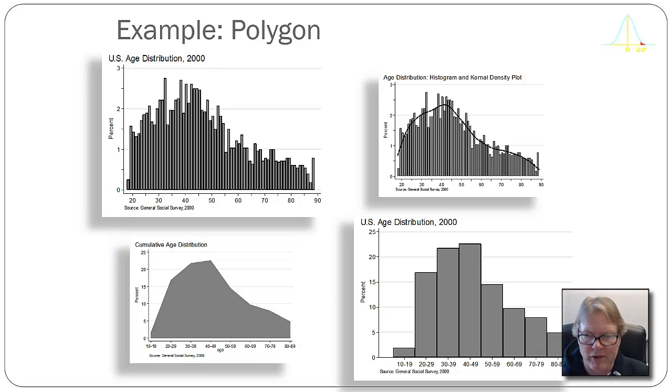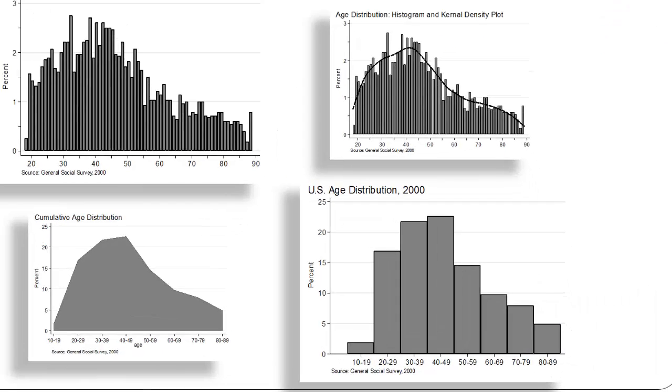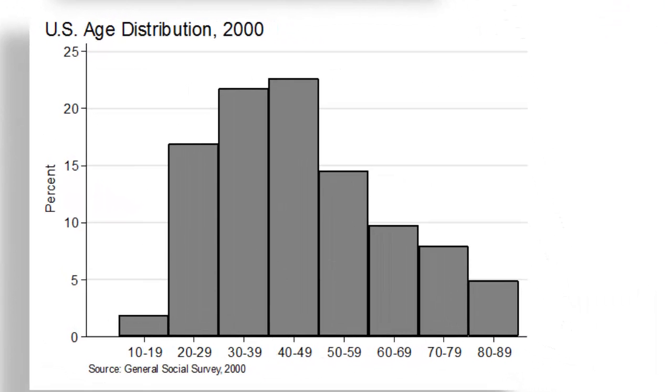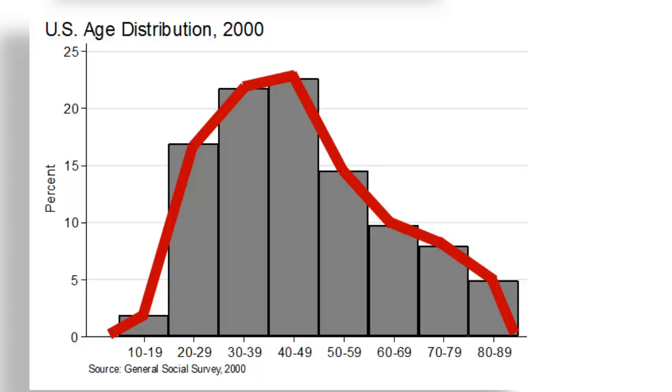Now, I'm going to use the distribution on the lower right to show you how that works. So here I have my grouped frequency distribution. If I were to draw a line from the midpoint of every one of those intervals to the next midpoint and connect them, that's my frequency polygon.